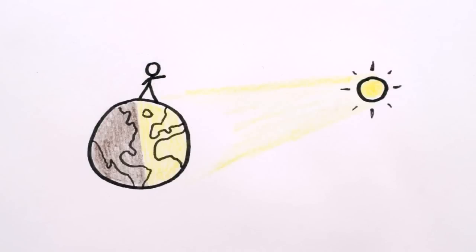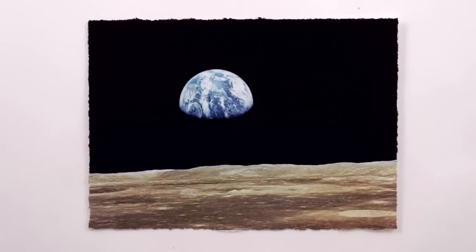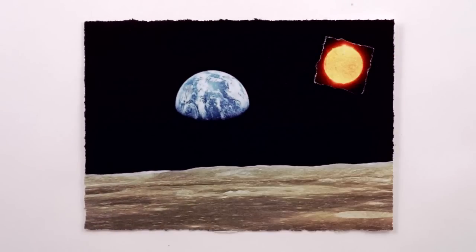But the only reason the sky looks blue during the day is that sunlight scatters off of the atmosphere. If we didn't have an atmosphere, like on the moon, the sky would always be dark, even when the sun is shining.